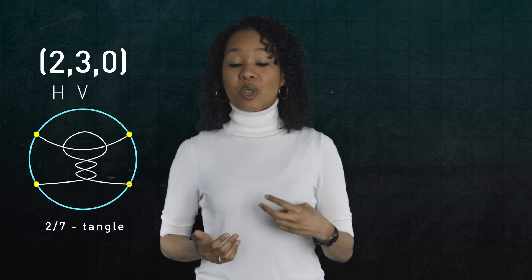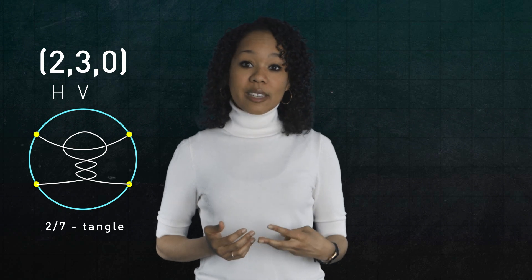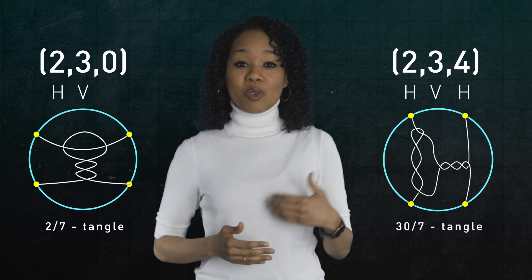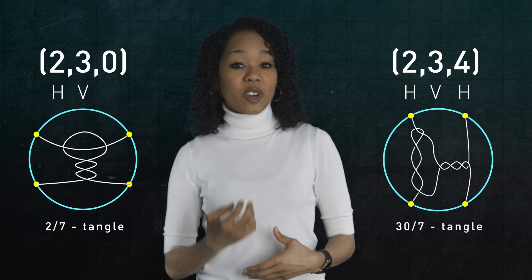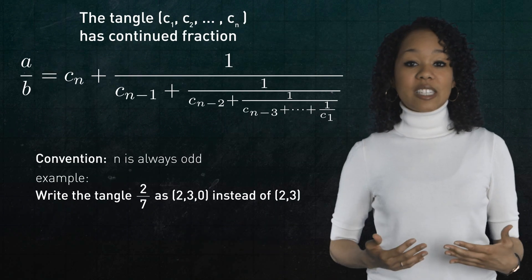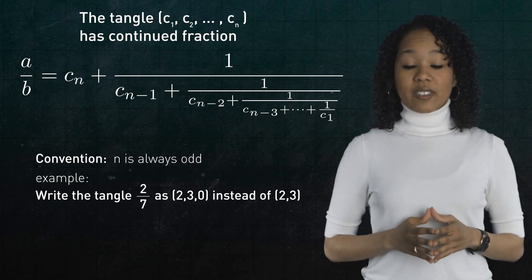A rational tangle is an alternating combination of vertical and horizontal twists, which we can represent by numbers in a list. For example, two, three, zero means do two horizontal twists, then three vertical twists and stop. While two, three, four means do two horizontal twists, then three vertical twists, then four horizontal twists.